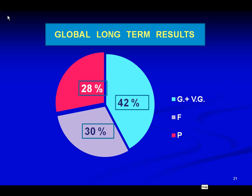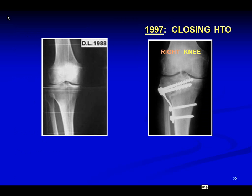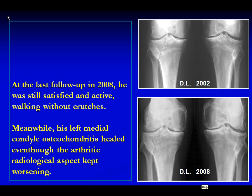The first case is a 62-year-old man with left knee medial meniscectomy, who had a closing HTO two years later for left knee 7 degrees varus and osteochondritis. In 1997 he had a closing osteotomy on the right knee. At last follow-up in 2008, he was still satisfied, active, and working without crutches. Meanwhile, his left medial condylar osteochondritis healed, even though the arthritic radiological appearance kept worsening.